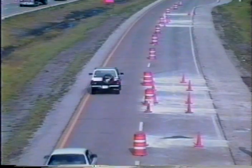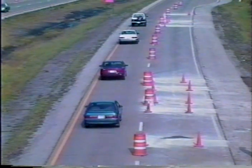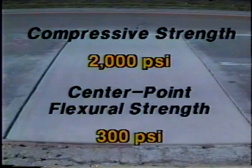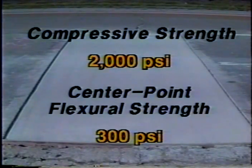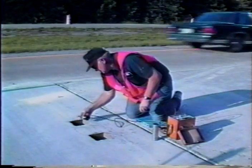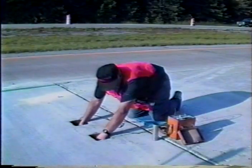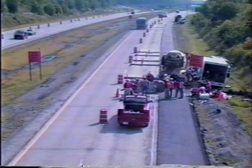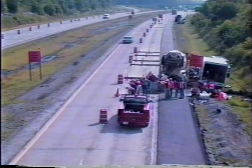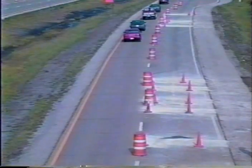That completes the repair procedure. All that remains is to wait until the concrete has reached adequate strength for opening to traffic. Adequate strength is based on either compressive strength or flexural strength — either a compressive strength of 2,000 PSI or a center-point flexural strength of 300 PSI is frequently used as the criterion for opening to traffic. Concrete strength can be determined by direct strength testing or non-destructive testing procedures such as maturity or pulse velocity. There are many important aspects of performing full-depth repairs on jointed concrete pavements. If you're planning full-depth repairs, consult the user's guide — it provides complete guidelines and guide specifications.